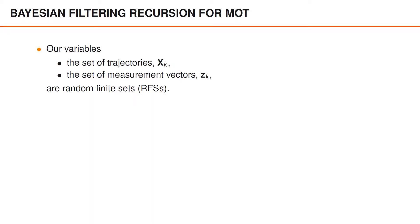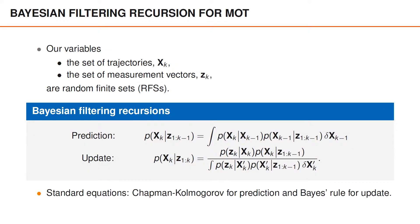Conceptually, we perform filtering in the same manner as before. The state variable, that represents the set of trajectories, and the set of measurements both face zk are both random finite sets. As before, we can perform prediction using the Chapman-Kolmogorov equation, and the update step using Bayes rule. Apart from the fact that the set of objects have been replaced by the set of trajectories, nothing else has changed.